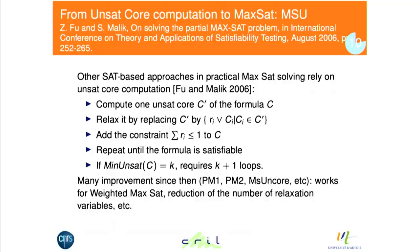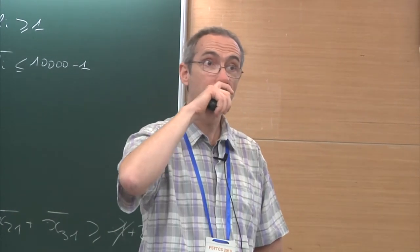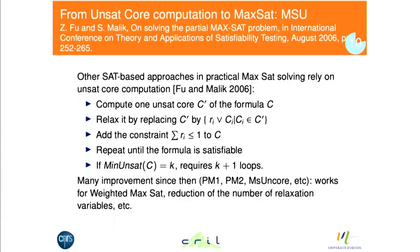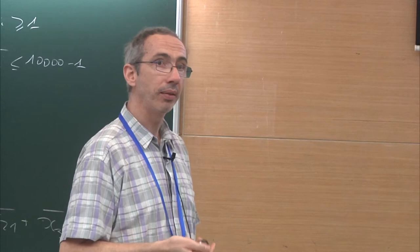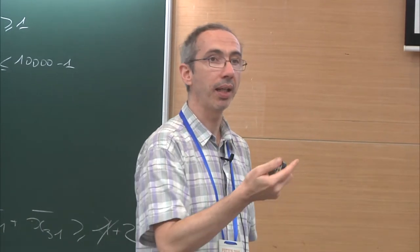One very impressive approach, presented in 2006, is MaxSAT solving based on retrieving UNSAT cores and solving the optimization problem not from the SAT side but from the UNSAT side. You ask the SAT solver: is it satisfiable? It says no, and gives you a set of constraints that is unsatisfiable. Then you relax those ones and ask again — is it satisfiable? You do that again and again.